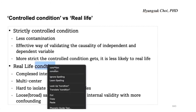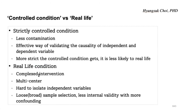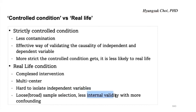What is a real-life condition? Complex intervention. It depends, individual to individual. It can be multicentric and hard to isolate the variables — the explanatory variables — and leads to broad sample selection, less internal validity, with more confounding.